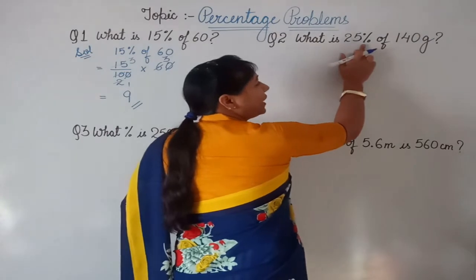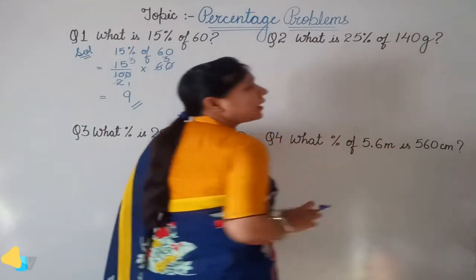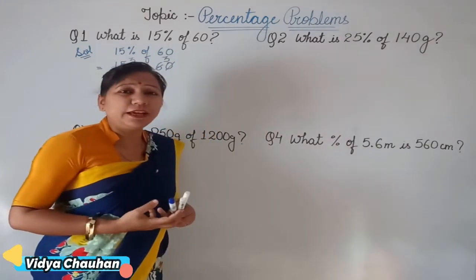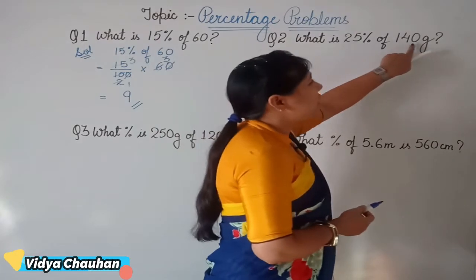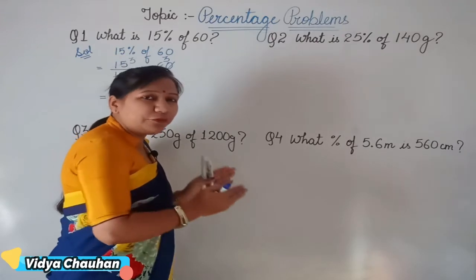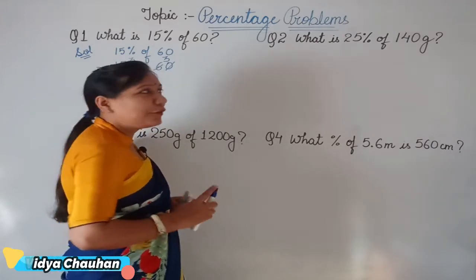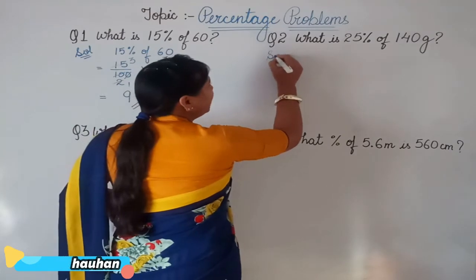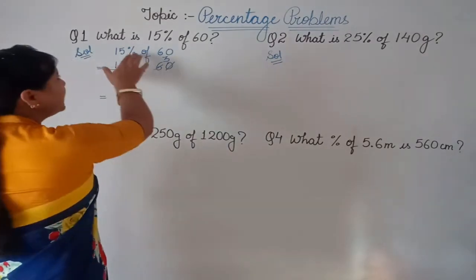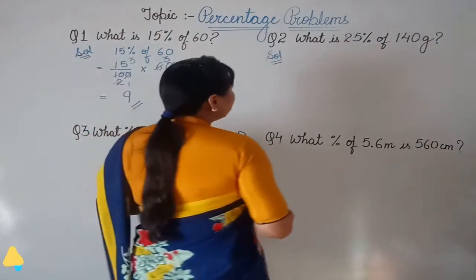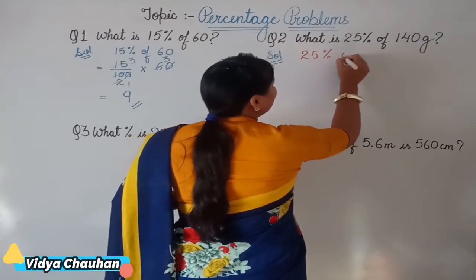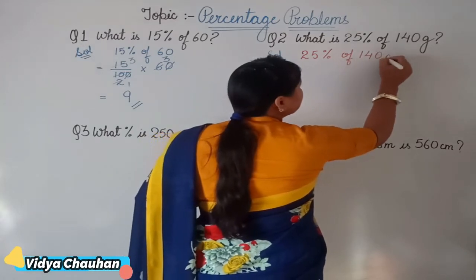Let's take one more question: what is 25 percent of 140 grams? Suppose you have some vegetable — the total weight is 140 grams — and you are asked to find 25 percent of this 140 grams of vegetable. We will solve it in the same manner as the previous question: 25 percent of 140 grams.